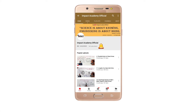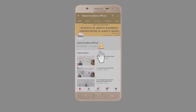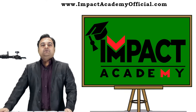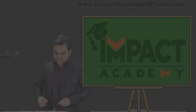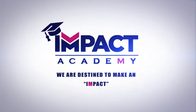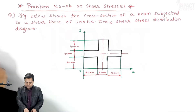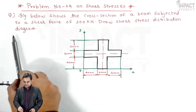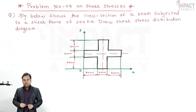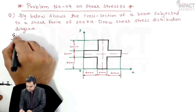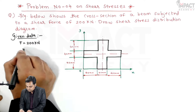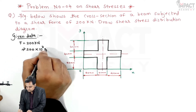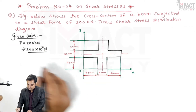Subscribe to our channel and press the bell icon for latest videos. Hi friends, here in this video we are going to see problem number four on shear stresses. The question shows the cross-section of a beam subjected to a shear force of 200 kilo Newton, where F is given. Draw the shear stress distribution diagram.